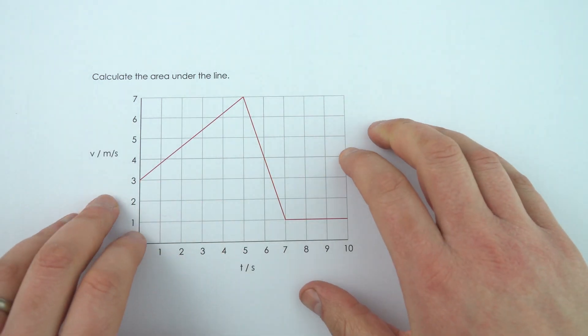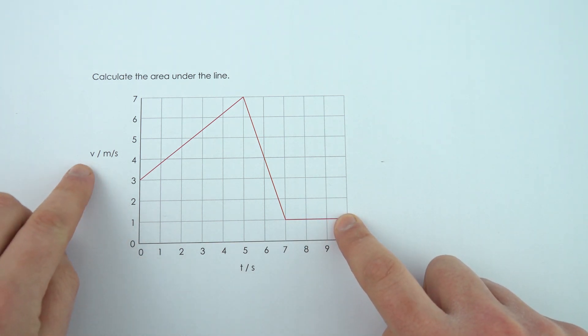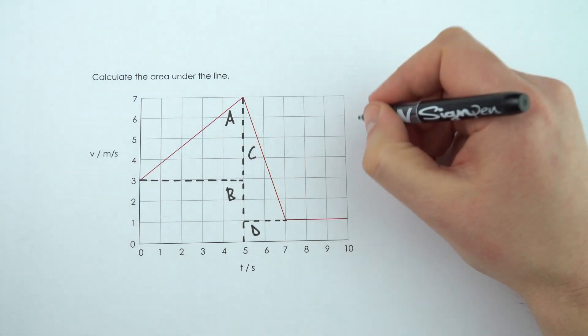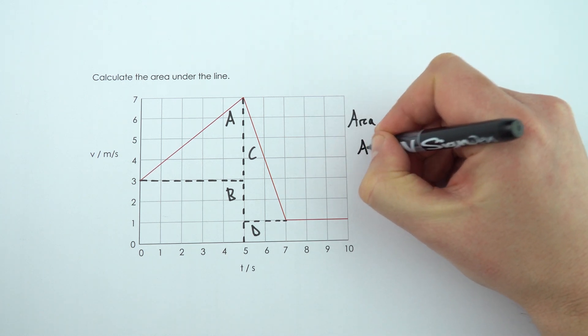And finally we have a more complicated example where we've got a line that goes up, goes down, and then goes along. This one here has V, so the speed or velocity in meters per second, and the time in seconds. Now to work out the area underneath the line on this graph, I'm just going to split it down into four simpler shapes. I've labeled them A, B, C, and D, and that means when I actually calculate my area, I'm going to do it for each shape in turn.